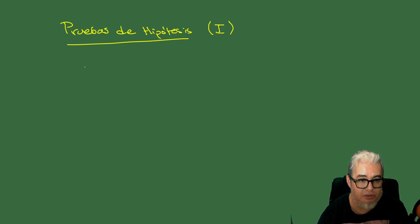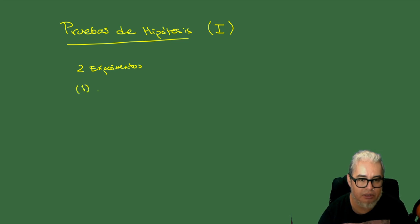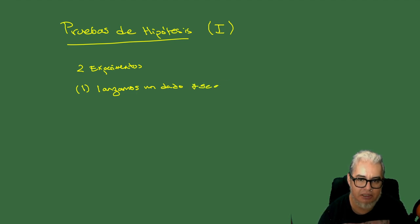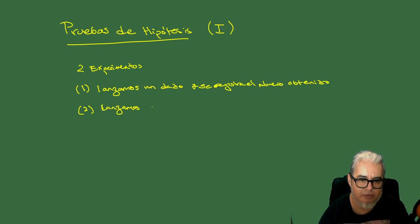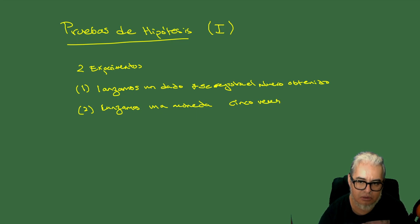Vamos a considerar dos experimentos aleatorios. El experimento uno es: vamos a lanzar un dado, que vamos a suponer que no está cargado, y se registra el número que sale. Y dos: vamos a lanzar una moneda cinco veces, igual, una moneda que suponemos que es equilibrada, que no está cargada.